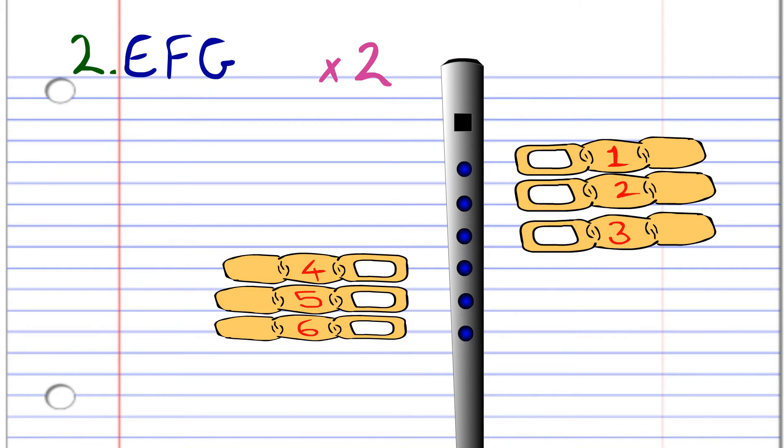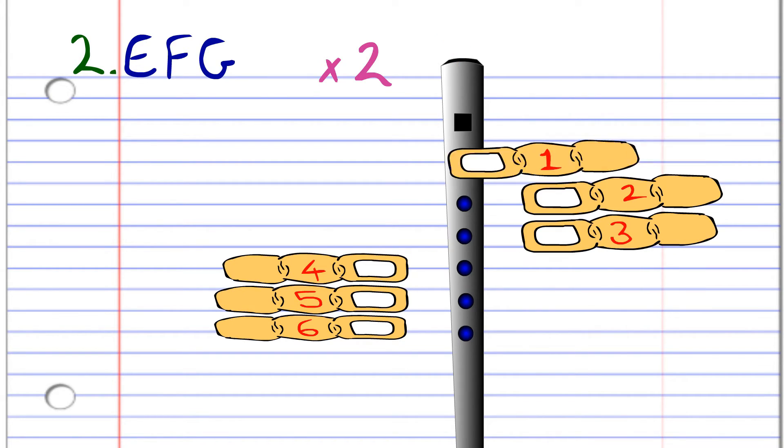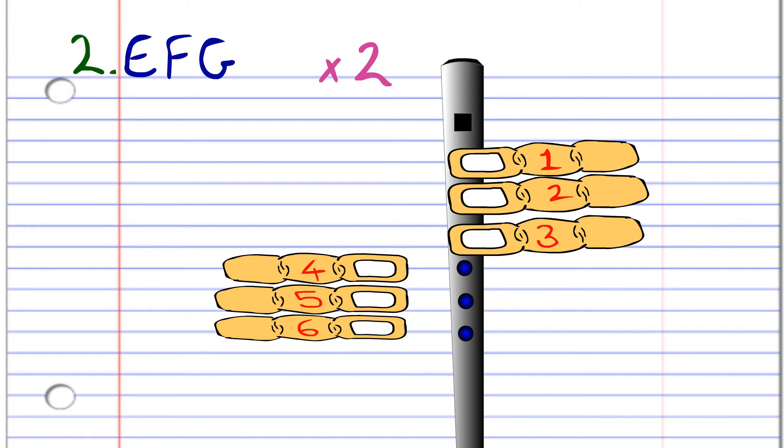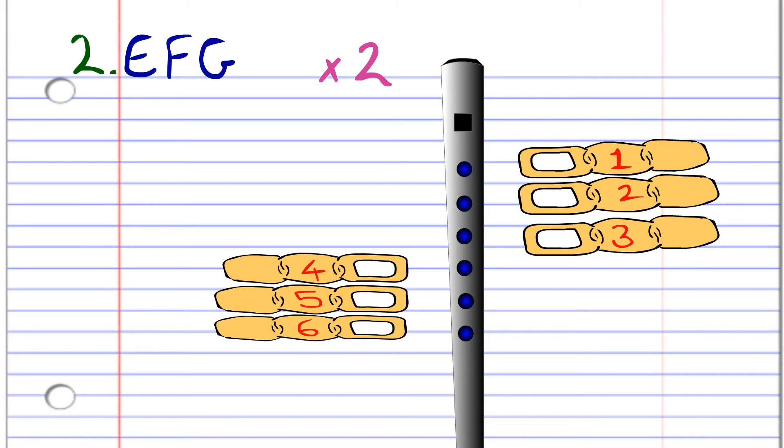For the second phrase, you'll need to cover holes one, two, three, and four with fingers one, two, three, and four and blow once. Then cover holes one to three with fingers one, two, and three and blow once. Now cover holes one to two with fingers one and two and blow once. Then repeat this phrase once, and after some practice you'll end up with something that sounds like this.